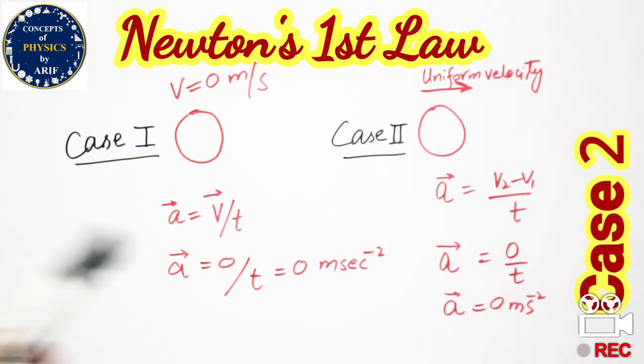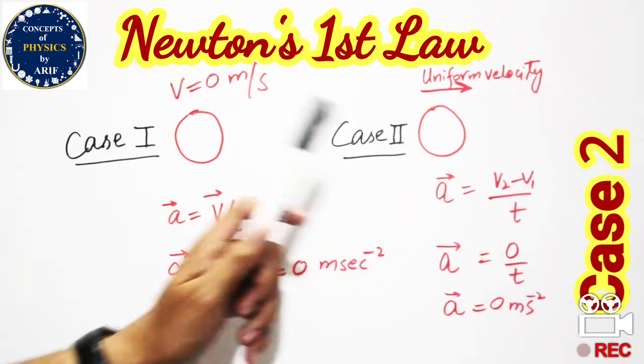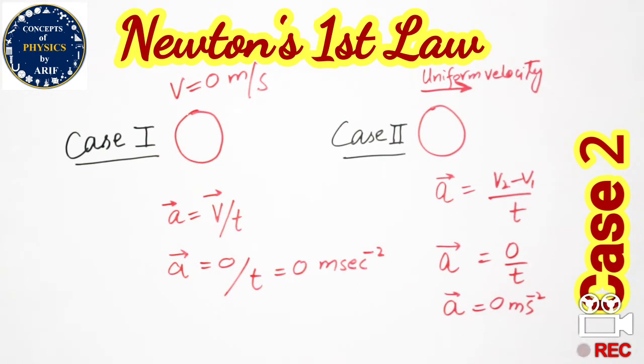Acceleration a equals change in velocity by t. This is a vector quantity. In this case, acceleration is equal to 0 by t, so acceleration will be zero.